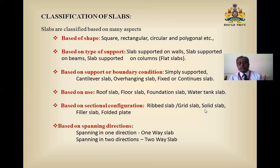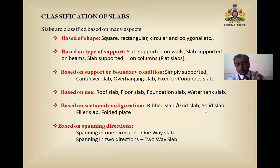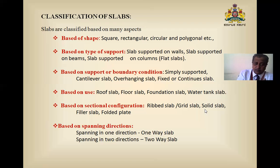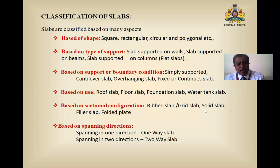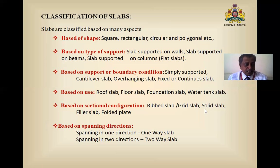Based on sectional configuration: a solid slab is the commonly seen all-concrete slab like a plate. A ribbed slab has ribbed beams or grid-like beams to form the slab. A filler slab is filled with filler material. Folded plates are very thin slabs used in industry — the geometric advantage of folded plates allows a very thin section.